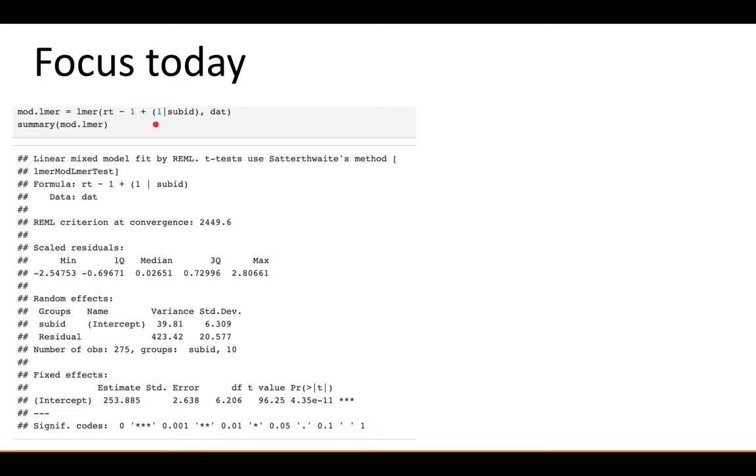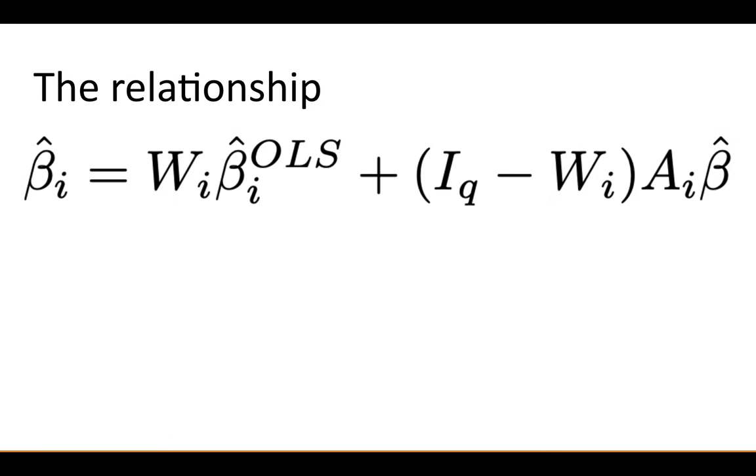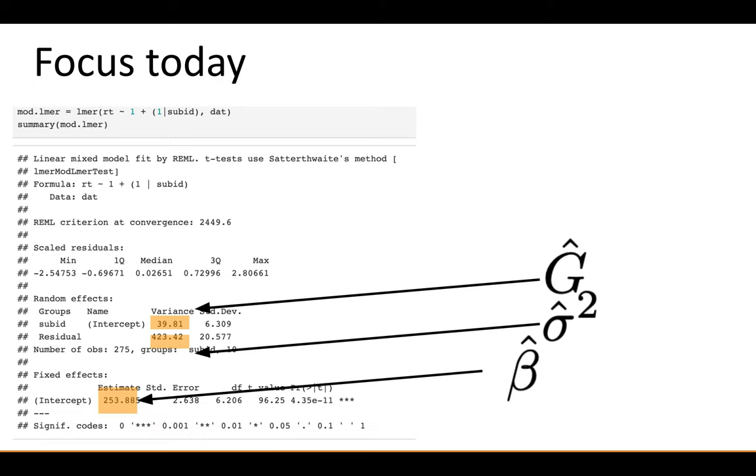The focus today is on the simple mixed model with just an intercept in it and then a random intercept grouped by subject. The data are simulated in this case. We have the overall mean beta hat—that's what the regularization will be dragging it toward. G hat, that's the between-subject variance, in this case 39.81. And then sigma hat squared, that's the within-subject variance, which is 423.42. So definitely get in the habit of when you're looking at these, in your head say what does this variance term correspond to? Keep going over that and it'll become more solidified.